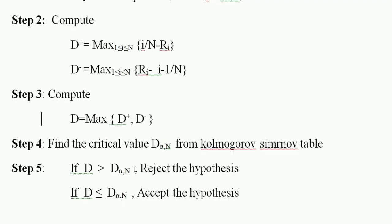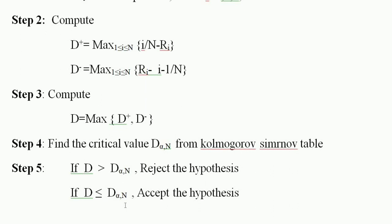In step 5, we check the condition: if D is greater than the critical value D(alpha, n), then we reject the hypothesis. If D is less than or equal to D(alpha, n), then we accept the hypothesis. This completes the procedure.